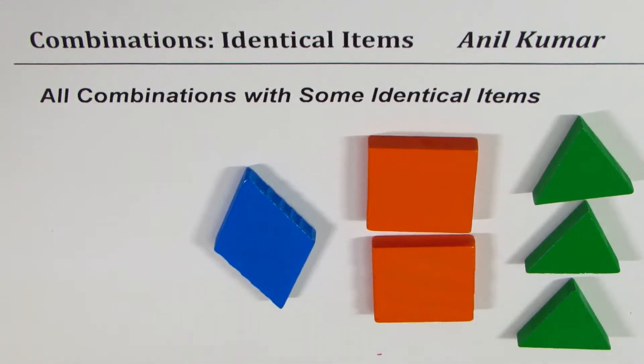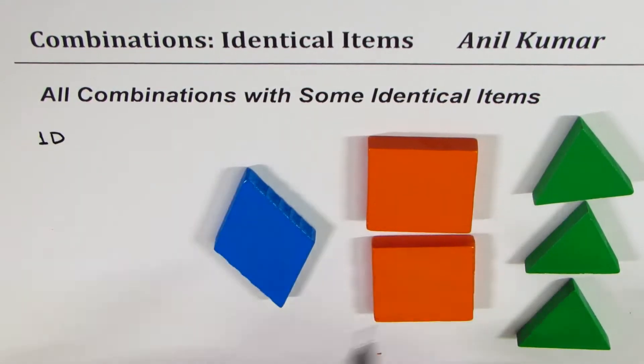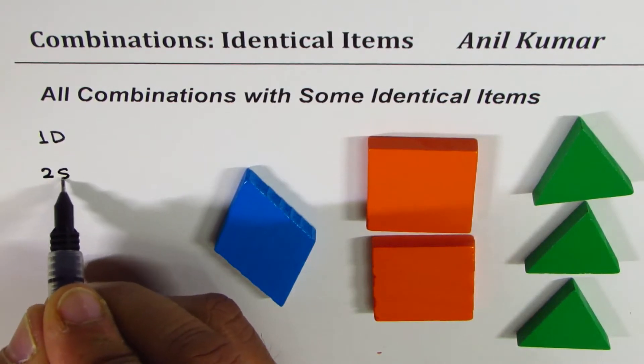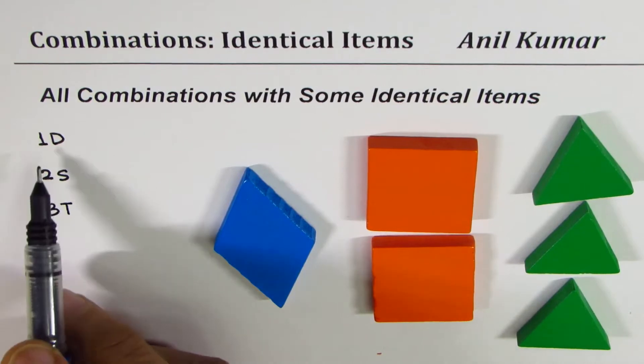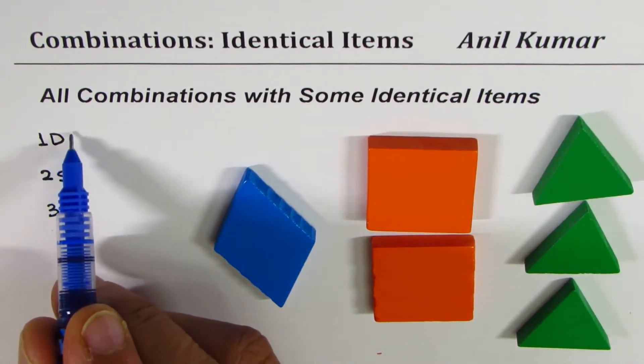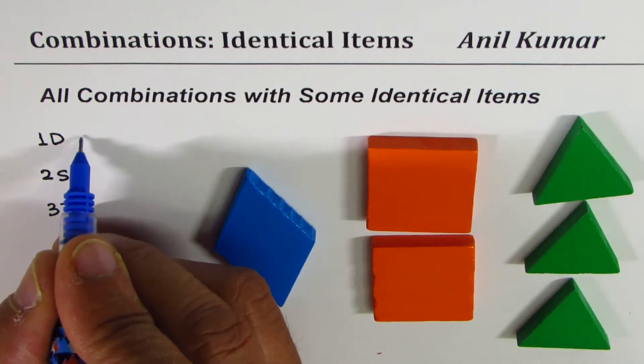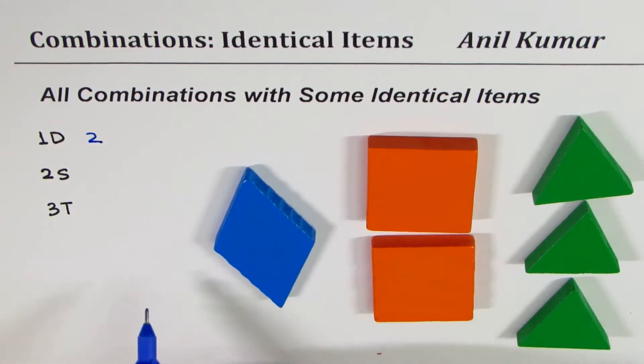The question here is how many combinations can you make with this set of elements, that is one diamond, two squares, and three triangles. To solve such questions, let's look into it one by one. What we have here is one diamond, two squares, and three triangles. What is the choice which I have for diamonds? I may select it, I may not select it, so I have two choices here.